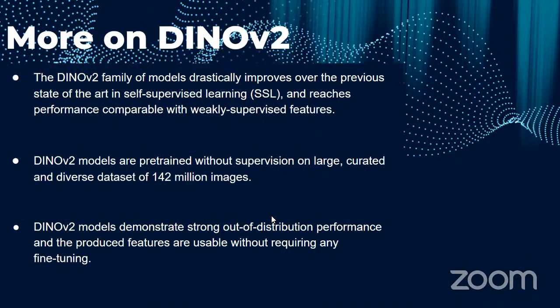The DINOv2 family of models drastically improves over the previous state of the art in self-supervised learning and reaches performance comparable with weakly supervised features. DINOv2 models are pre-trained on a large curated and diverse dataset of 142 million images. DINOv2 models demonstrate strong out-of-distribution performance, and the produced features are usable without requiring any fine-tuning.